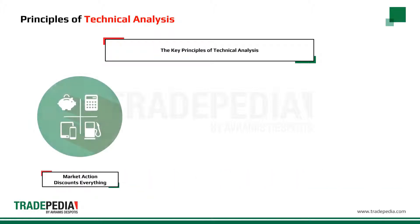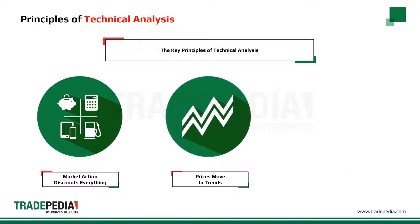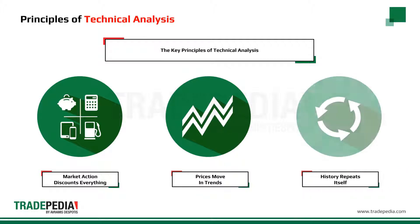Number one, that the market action discounts everything. Number two, that prices move in trends. And number three, that history repeats itself. Let's take a look at them one by one.